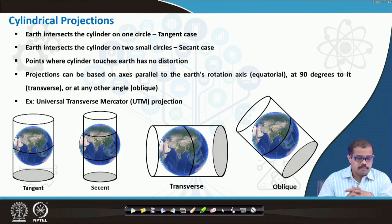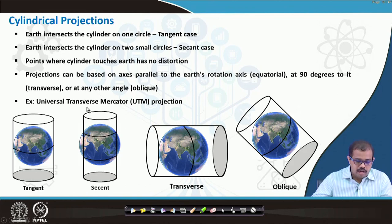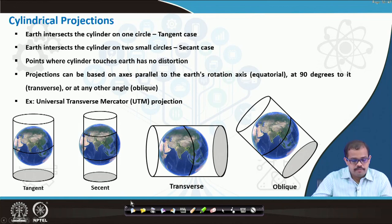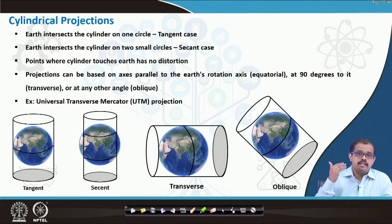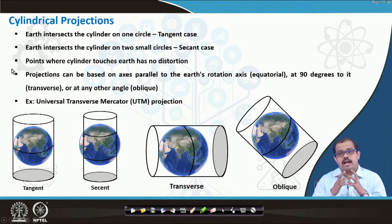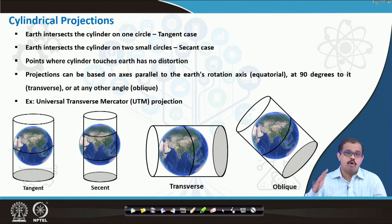Going into more details of cylindrical projections: the earth intersects the cylinder at one circle in the tangent case. You also have a secant case, a transverse case, and an oblique case. Each earth intersects a cylinder as 2 small circles in the secant case. Points where the cylinder touches the earth have absolutely no distortions, but where it is farther from that point you have a higher amount of distortions. Projections can also be based on axes parallel to the earth's rotational axis, at 90 degrees to it (transverse), or at oblique angles such as 60 or 70 degrees.